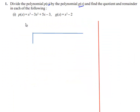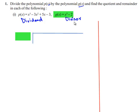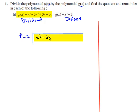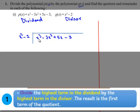So p becomes the dividend and g becomes the divisor. The divisor x square minus 2 is written here and the dividend x cube minus 3x square plus 5x minus 3 is written here. The highest degree term of the dividend is x cube and the highest degree term of the divisor is x square. So on dividing x cube by x square, we get x.